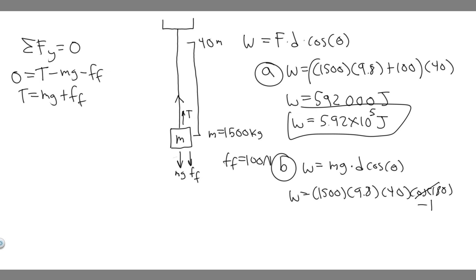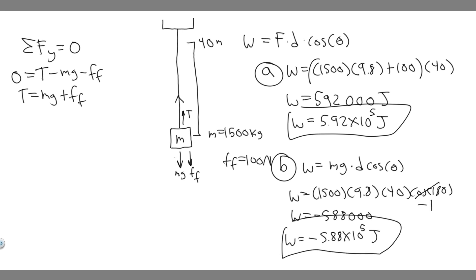We multiply 1500 times 9.8 times 40, then multiply by minus 1, so the work is negative. The work done by gravity comes out to minus 588,000 joules, or minus 5.88 times 10 to the 5 joules. This is the work done by the gravitational force — your answer to part B.